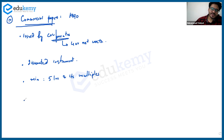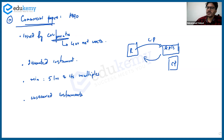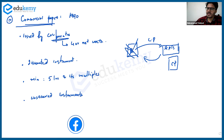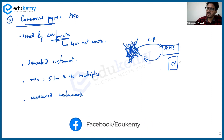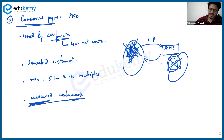Commercial papers are unsecured instruments. For example, suppose Reliance has issued a commercial paper to Axis Bank, and Axis Bank has given a lot of money to Reliance. If Reliance becomes insolvent or bankrupt, the commercial paper becomes worthless. That is why they are called unsecured instruments.